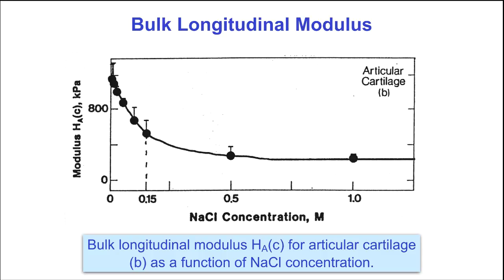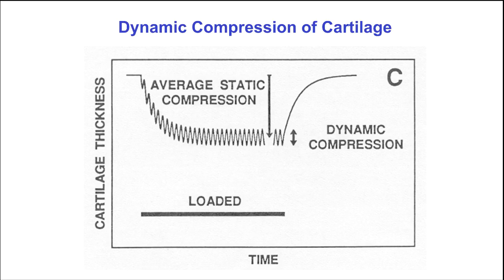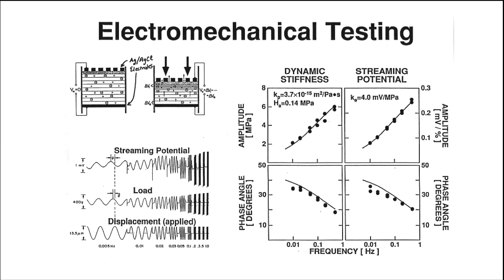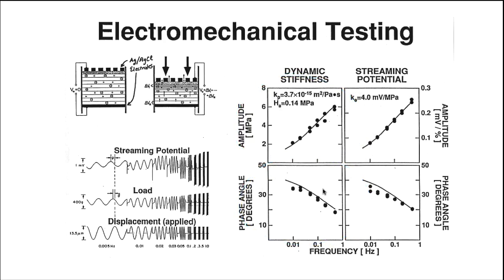This shows how important the electroosmotic forces are in determining the equilibrium confined compression modulus. Conversely, increasing the salt concentration decreases the fixed charge density because the GAGs attract and concentrate positive sodium ions, which has the effect of decreasing the equilibrium confined compression modulus. In the same way that dynamic shear properties can be measured, so can dynamic compressive properties. Oscillating compressive displacements are often superimposed on a static load. In this dynamic compression experiment, the amplitude and phase of the complex compressive modulus, as well as the amplitude and phase of the electrical streaming potential, have been measured. Note how similar the changes in these properties are with frequency, suggesting that electrostatic effects are very important in cartilage mechanics.